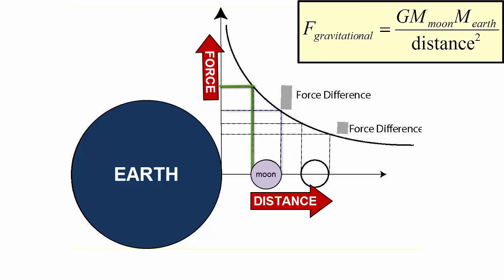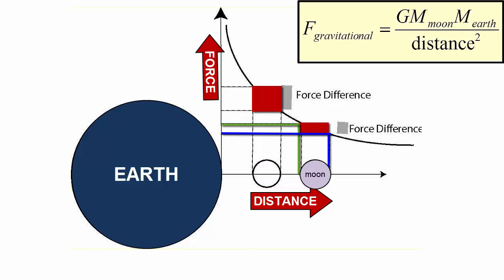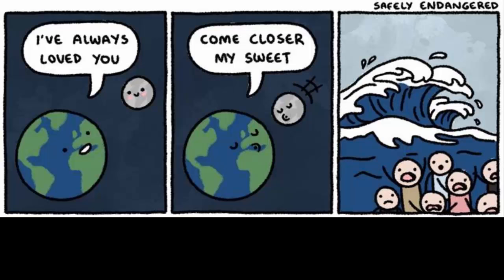For the close Moon, when we take the difference between the near side force and the far side force, we get a force differential this large. When we move the Moon further away, we see that the near side force and far side forces vary less. The force differential is smaller, so the tides would be smaller. This cartoon says the same thing in a much more clever way.